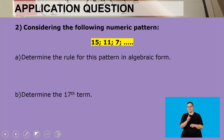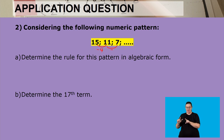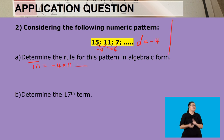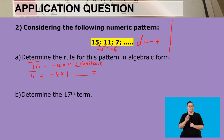Moving on to the next question: we have 15, 11, and 7. We first find the rule. From the first term to the second term we are subtracting 4, and from the second term to the third term we are also subtracting 4, so our constant difference is negative 4. We take our constant difference, multiply it by the term number, then add or subtract a constant. Using the first term: negative 4 multiplied by 1.